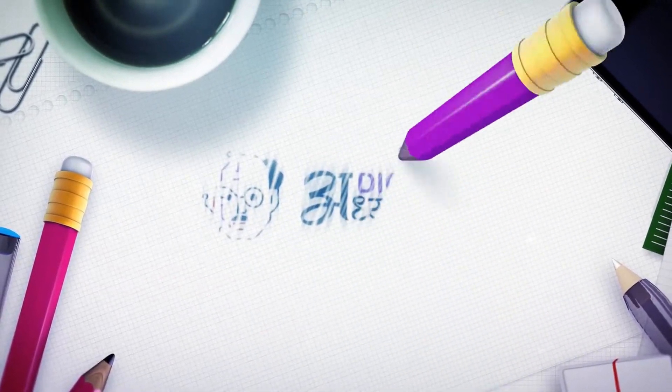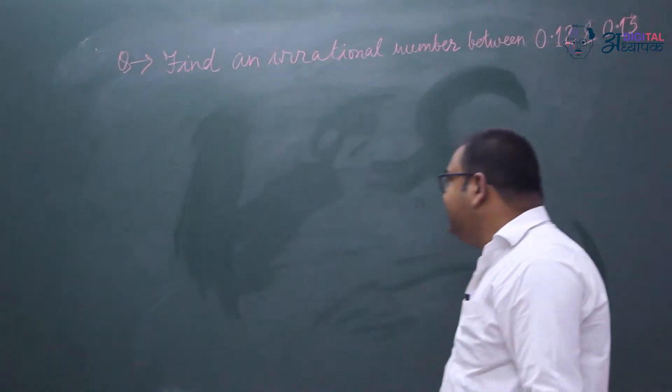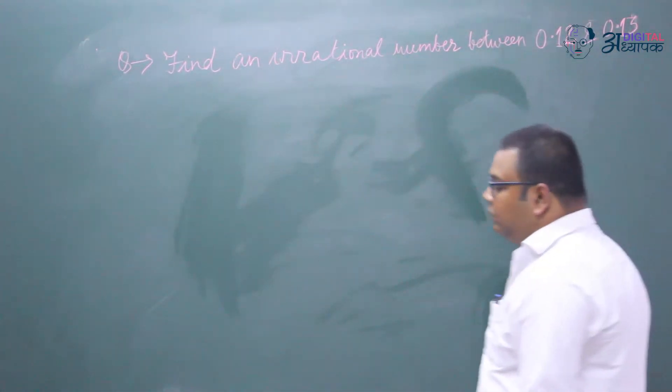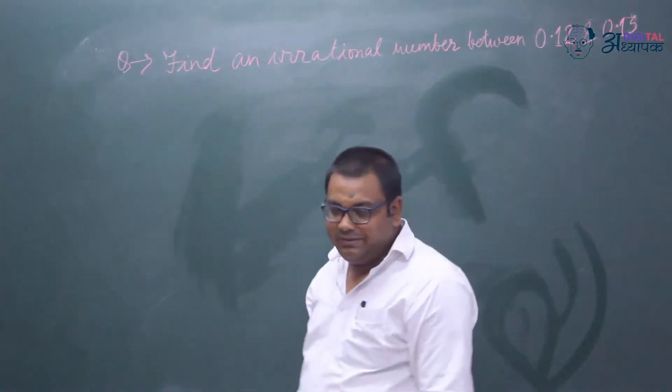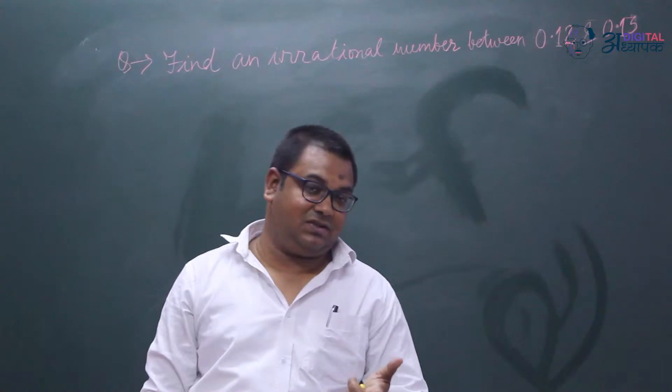Welcome to Digital Adhyapak. The question is an easy one. We have to find an irrational number between 0.12 and 0.13. That means we have to find an irrational number between two given rational numbers.